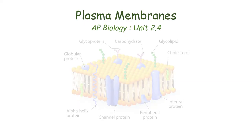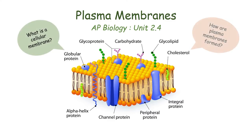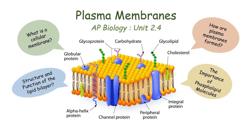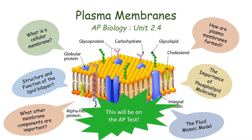Did you know that the plasma membrane is likely the most important subcellular component for life on Earth? Also called the cellular membrane, this simple lipid bilayer creates many of the functions of life. You need to understand exactly what a lipid bilayer is, how plasma membranes are formed, and what sorts of modifications can be added to create specific functions in cells. The AP Biology test hits this subject hard.